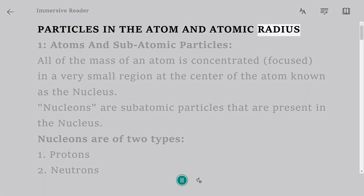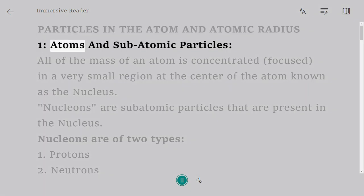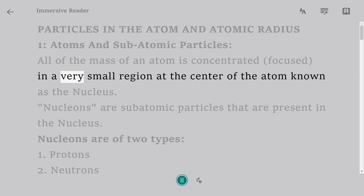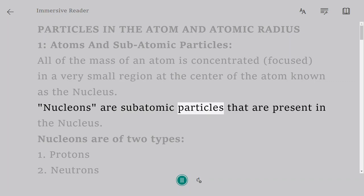Particles in the Atom and Atomic Radius. 1. Atoms and Subatomic Particles. All of the mass of an atom is concentrated, focused, in a very small region at the center of the atom known as the nucleus. Nucleons are subatomic particles that are present in the nucleus. Nucleons are of two types.